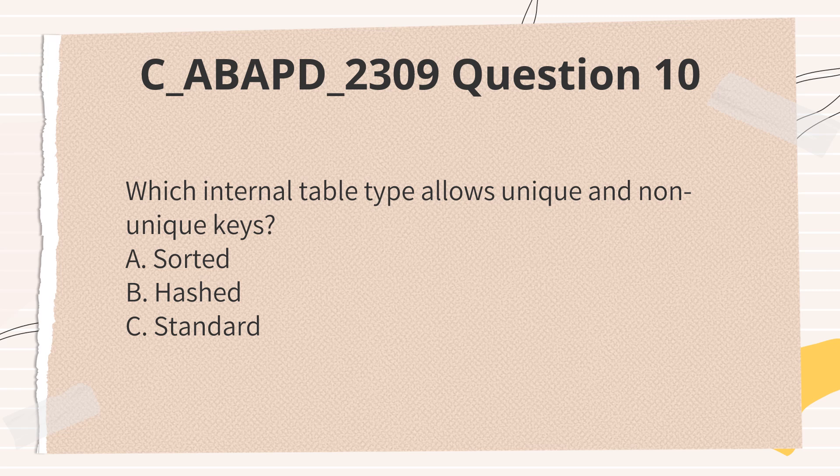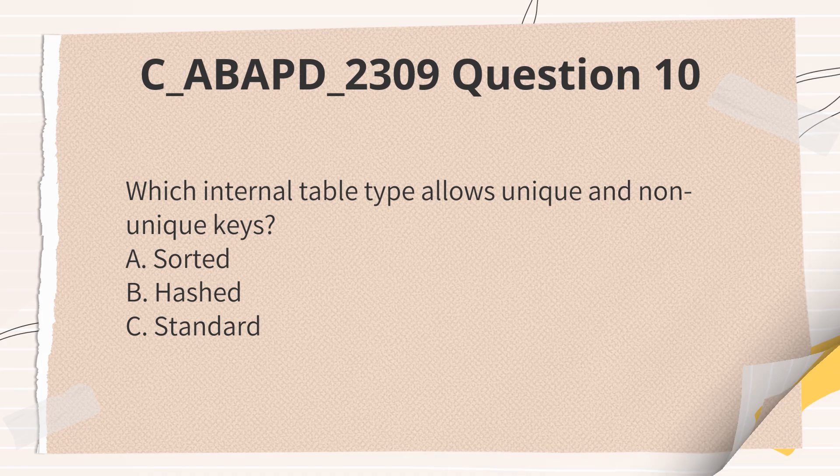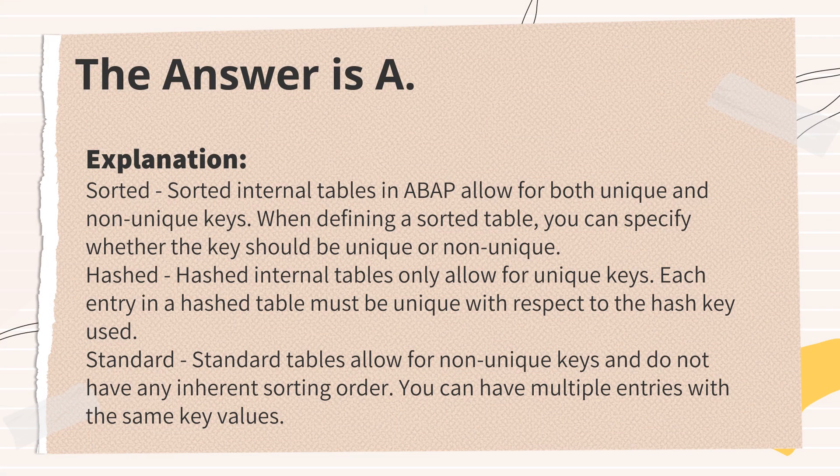Which internal table type allows unique and non-unique keys? The answer is A: Sorted. Sorted internal tables in ABAP allow for both unique and non-unique keys — when defining a sorted table, you can specify whether the key should be unique or non-unique. Hashed internal tables only allow unique keys, and standard tables allow non-unique keys but have no inherent sorting order.